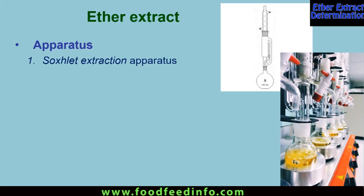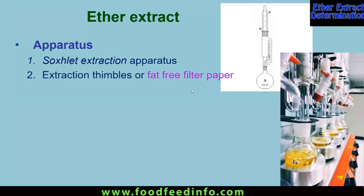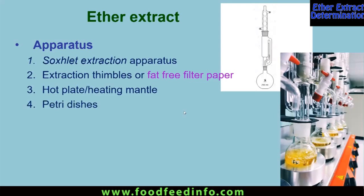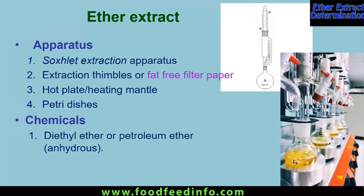The volatilized ether passes through the chamber and, due to the cooling action of the condenser where water is flowing, it condenses and falls on the sample placed in the extraction chamber. We also need extraction thimbles or fat-free filter papers, a hot plate or heating mantle — here we are running six samples at a time so the apparatus has six heaters — a petri dish for placing the sample in the oven, a desiccator, and the only chemical required is diethyl ether or petroleum ether.